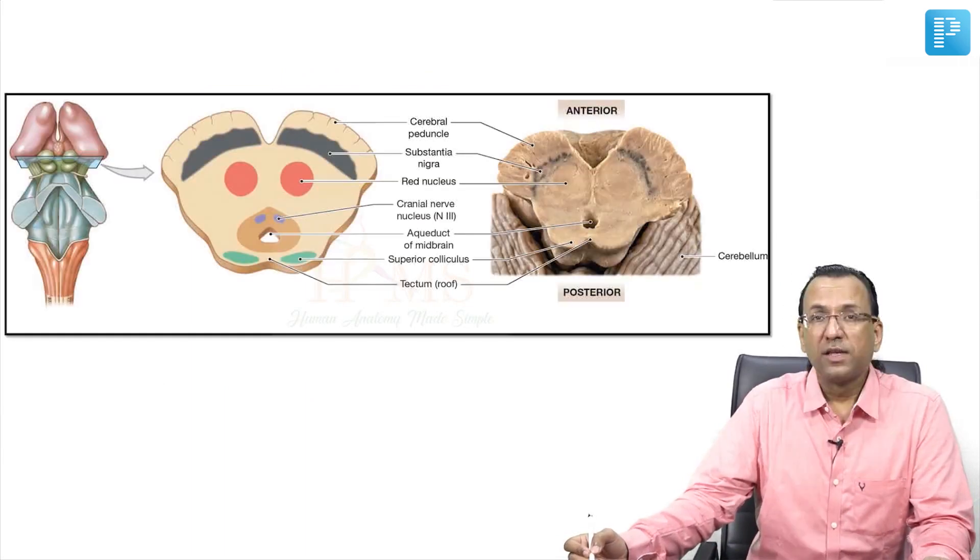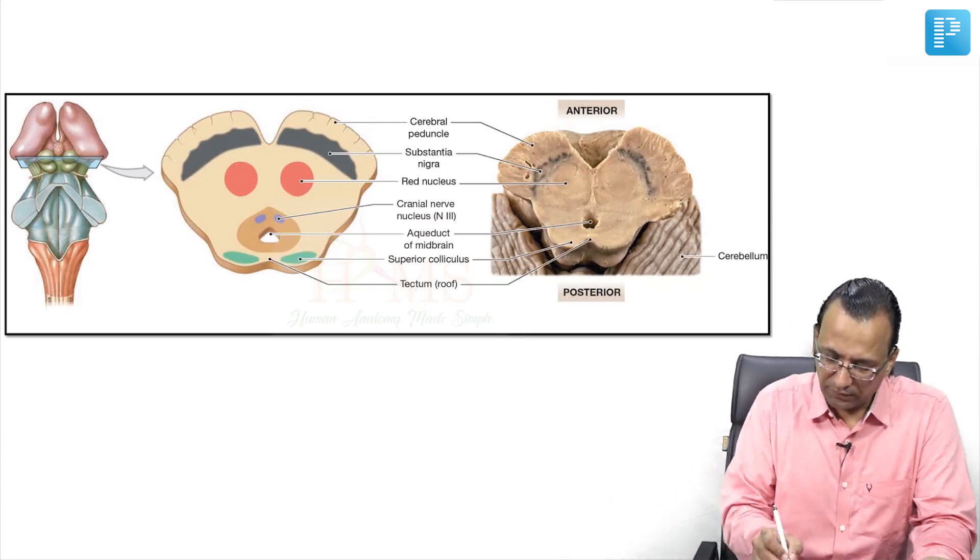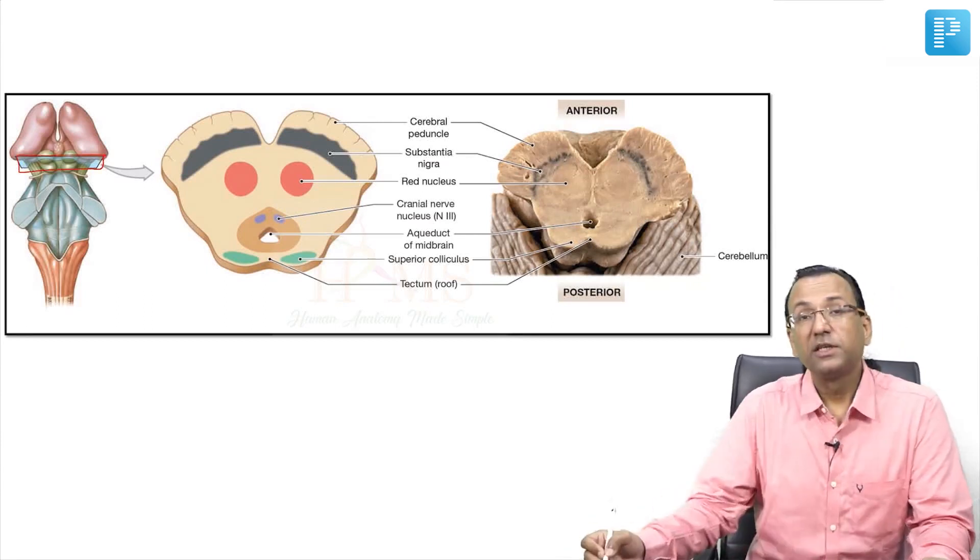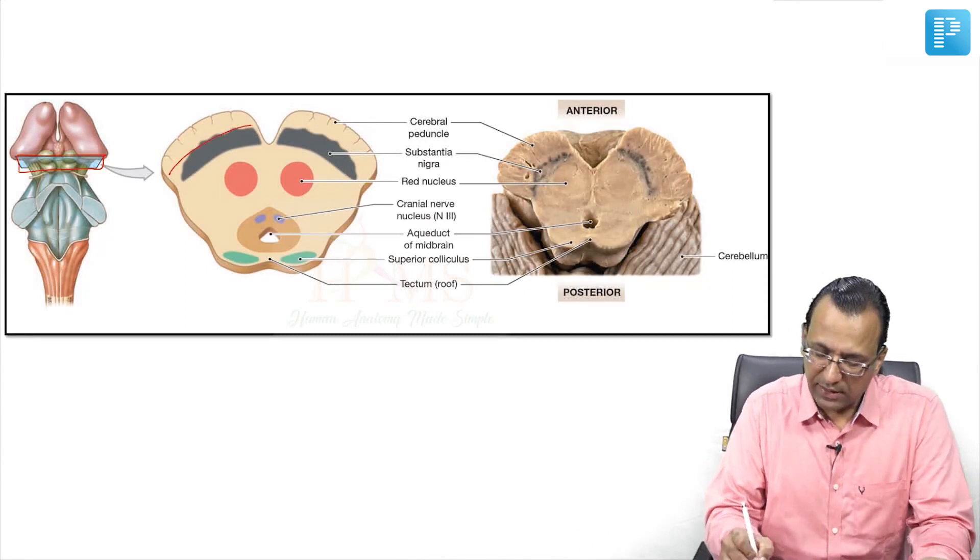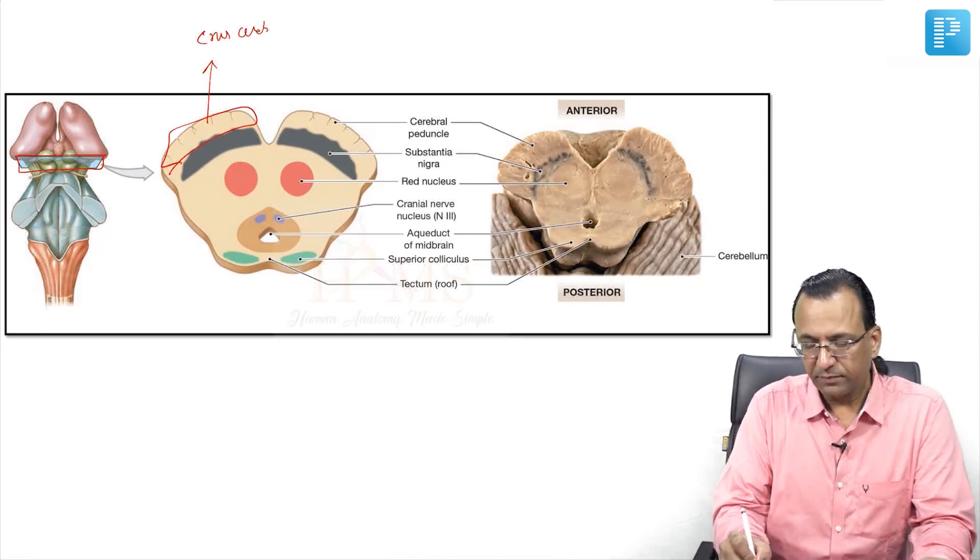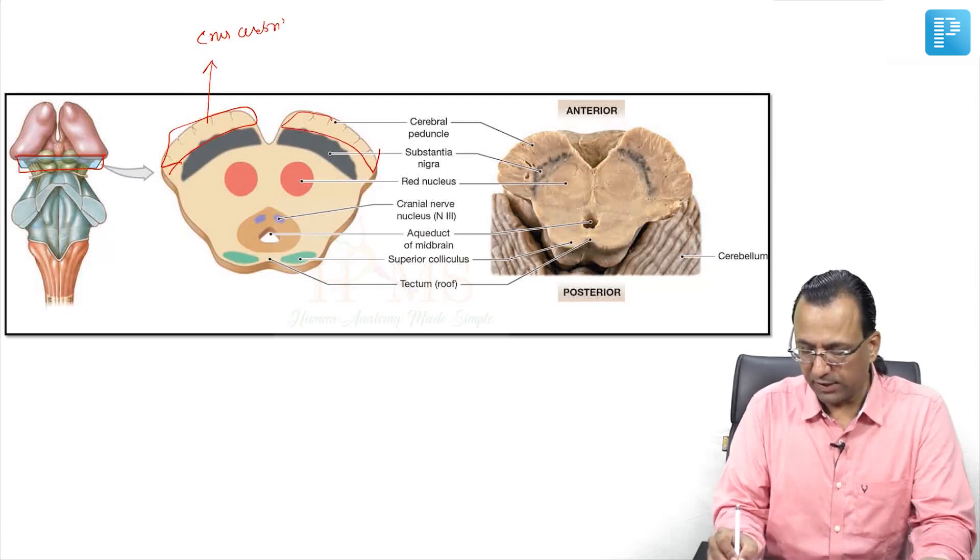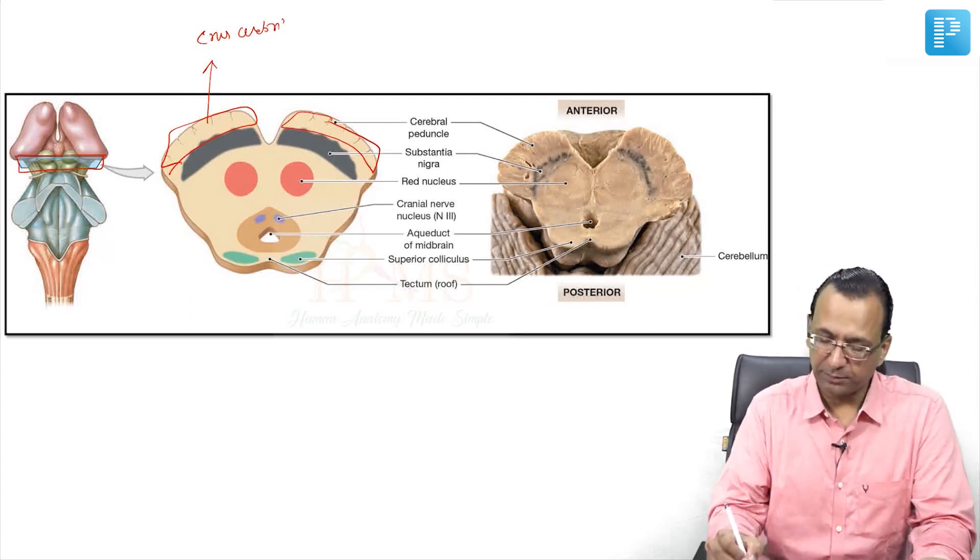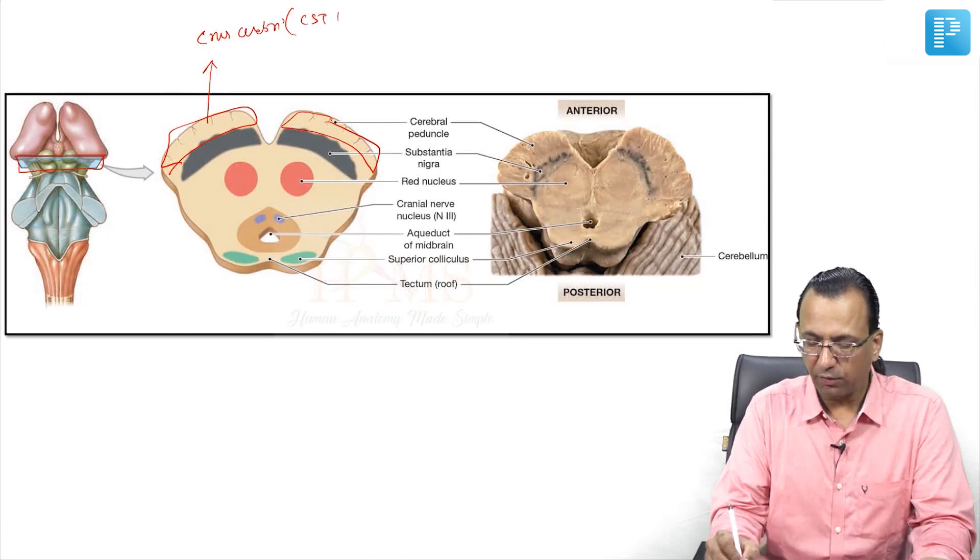This is the diagram, and as you have taken the transverse section, this is the anterior aspect of the midbrain which is crust cerebrae on both sides. That is where the pyramidal tract is passing: corticospinal tract plus corticonuclear tract, the pyramidal system.